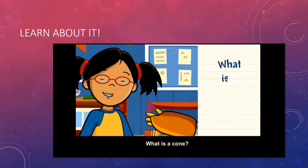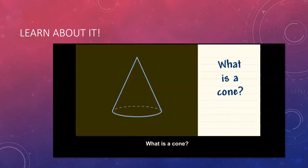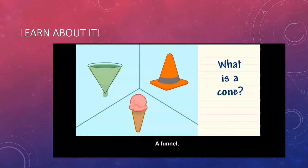What is a cone? A cone is a solid figure with one face which is at its base. It's shaped like a circle. It has one point and a curved surface. A funnel, a traffic cone, and an ice cream cone are all cones.